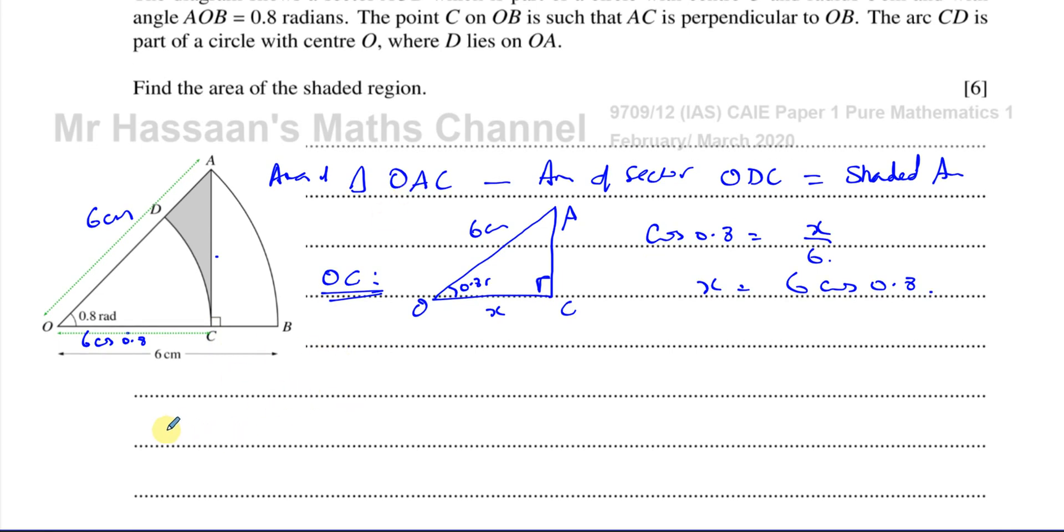So the area of the triangle OAC is going to be a half times the two sides which is 6 times 6 cosine of 0.8 times the sine of the angle between them which is sine of 0.8. That's the area of the triangle minus the area of the sector.